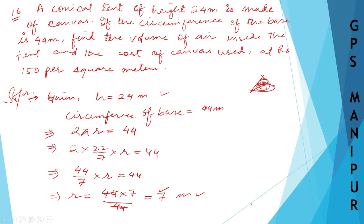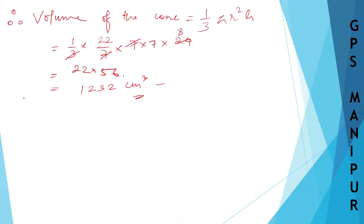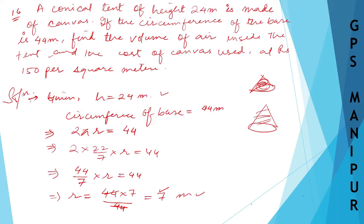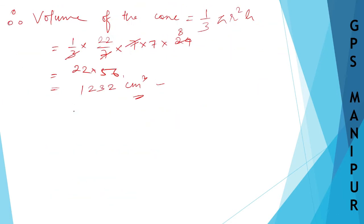The question also asks for the cost of the canvas used at rupees 150 per square meter. So we need to find out the cost of the cloth used for the tent. For that, we need to find the curved surface area of the cone.